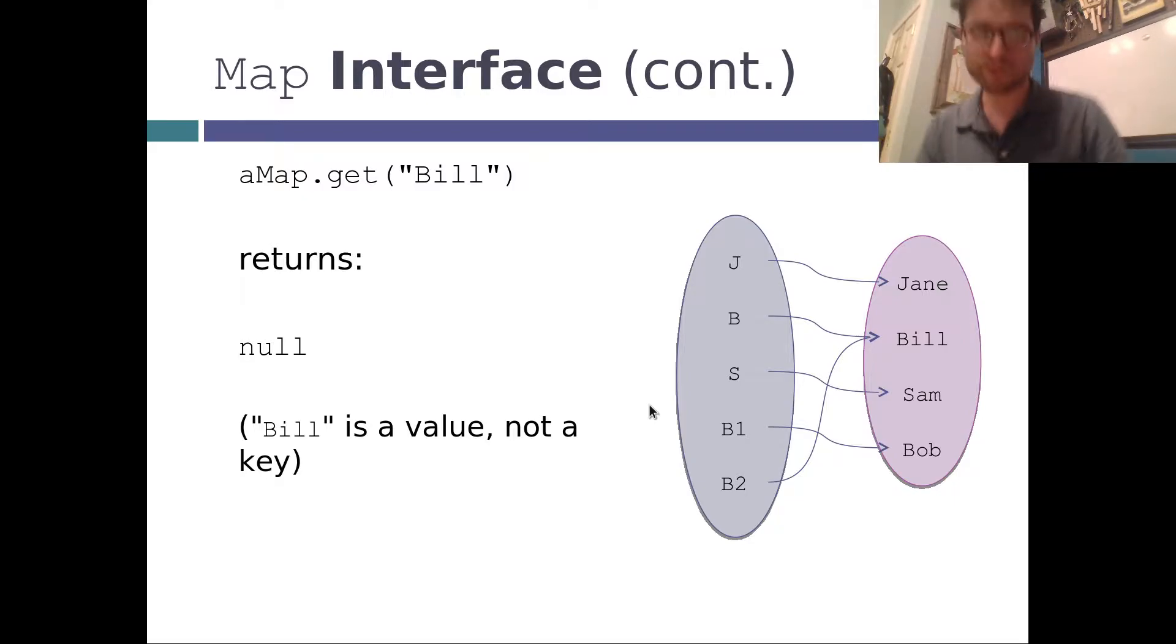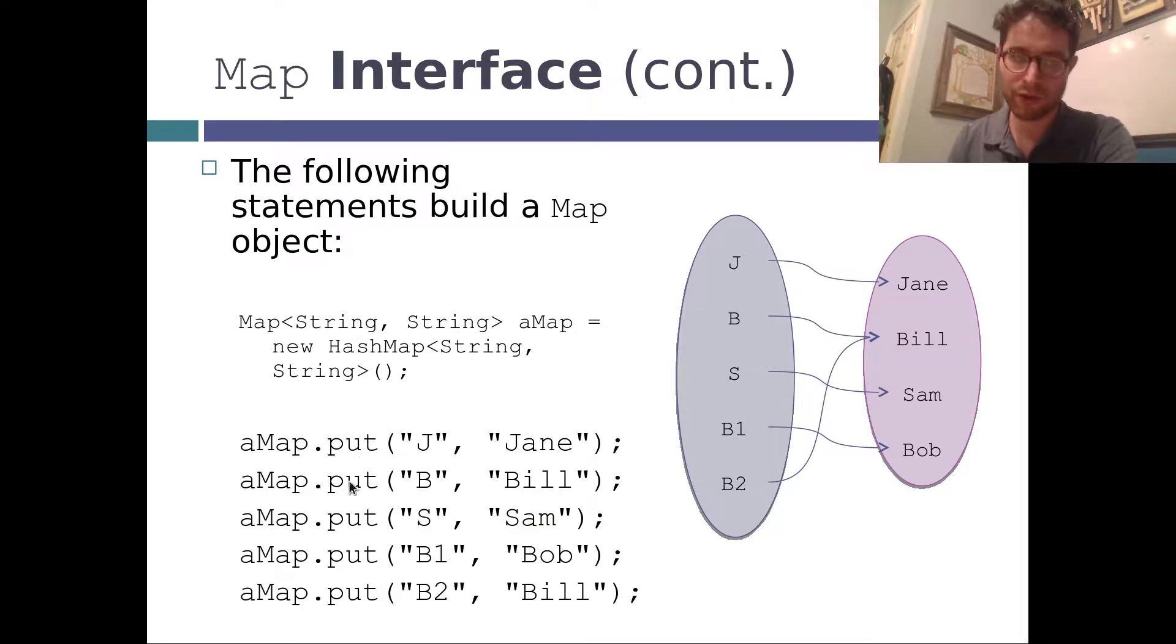So, now the big thing here, if I were to do put B Billy, B would now point to Billy, instead of having B point to two different things. That's kind of a big concept there, but it becomes clear when we code up a real example. You can only have one instance of each key. Each key is unique.